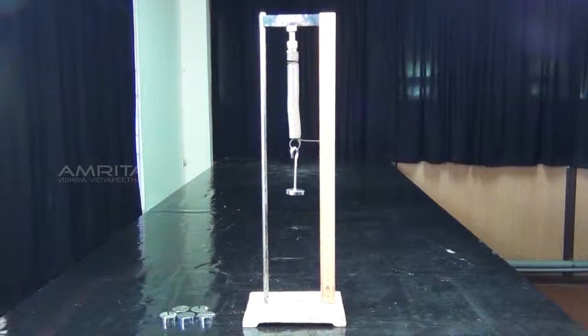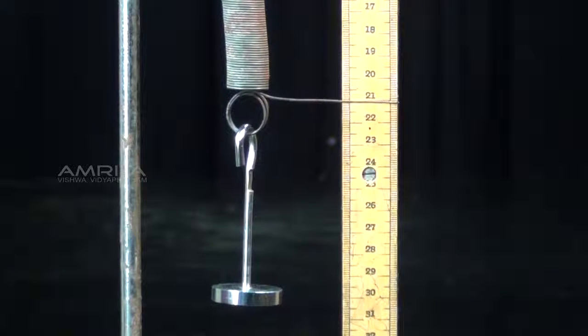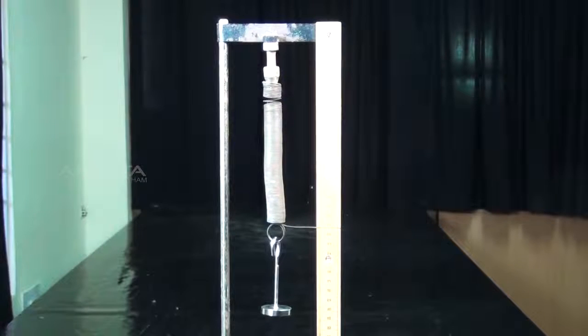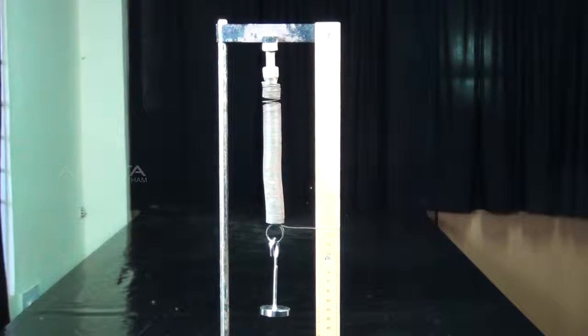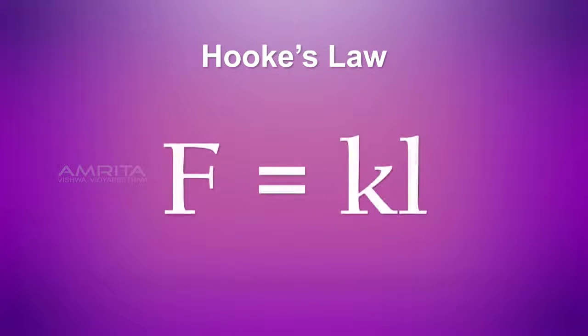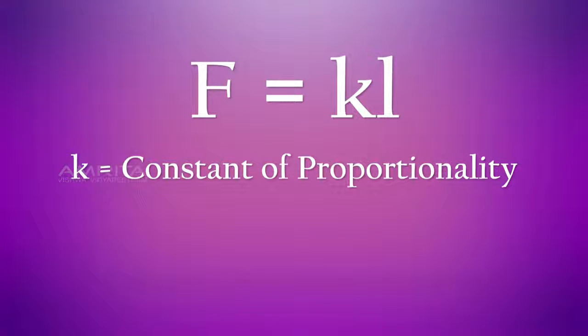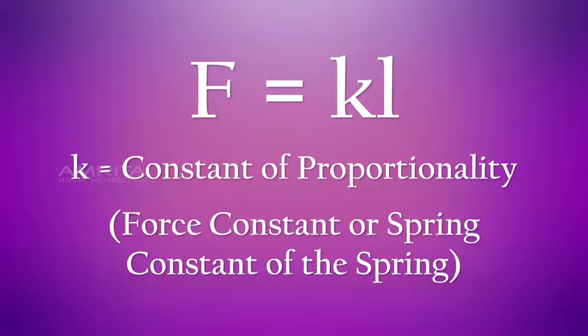When load F is suspended from the lower free end of the spring hanging from a rigid support, it increases the spring's length by amount L. Then, according to Hooke's law, F is proportional to L or F equals KL, where K is the constant of proportionality called the force constant or the spring constant of the spring.